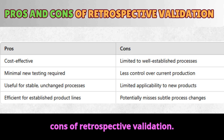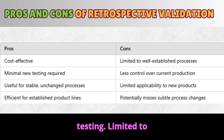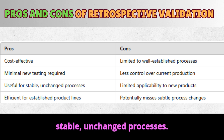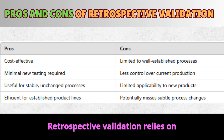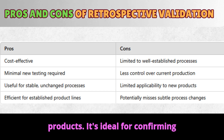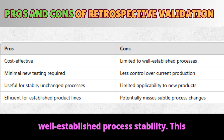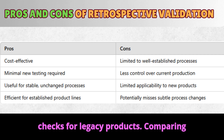Pros and cons of retrospective validation. Pros: cost-effective and doesn't require new testing. Cons: limited to stable, unchanged processes. Retrospective validation relies on consistency, so it's unsuitable for new products. It's ideal for confirming well-established process stability. This type can efficiently support quality checks for legacy products.